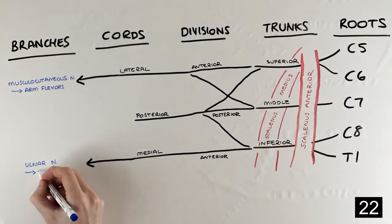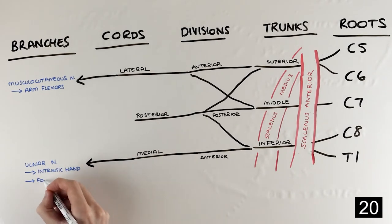The medial cord becomes the ulnar nerve, innervating most of the intrinsic hand muscles and a few forearm flexors.